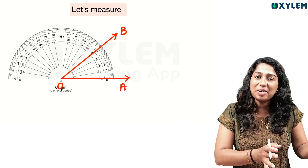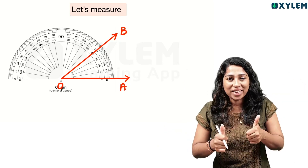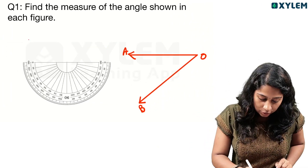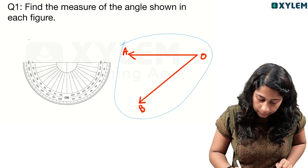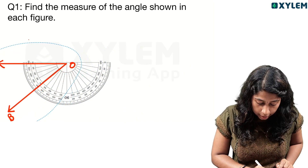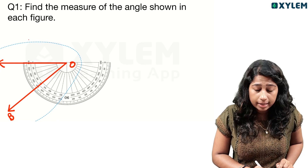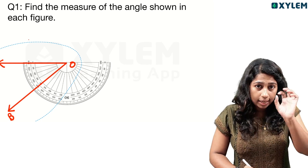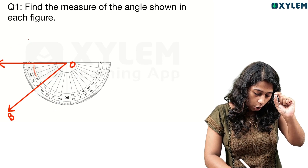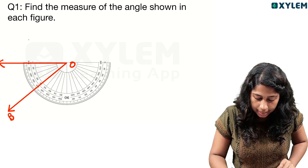The angle is here. Let's check this angle — confirm that the vertex meets the origin, one arm is along the baseline, and that reads zero. We check the angle — it is 40 degrees. That measure is 40 degrees.